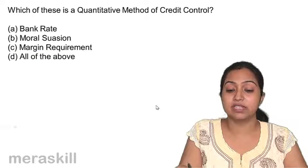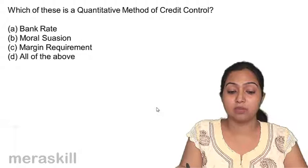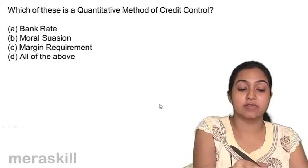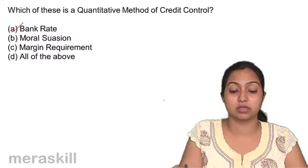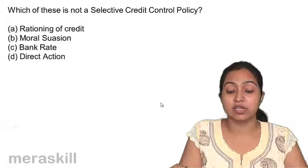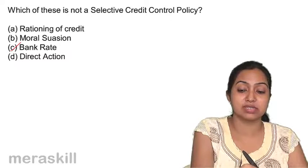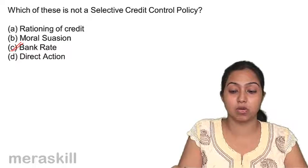Which of these is a quantitative method? Bank rate is quantitative. Margin requirement and moral suasion are qualitative methods. Which of the following is not a selective credit control policy? Bank rate is not selective — it is a general credit control policy.